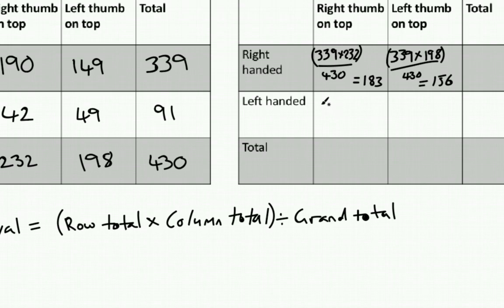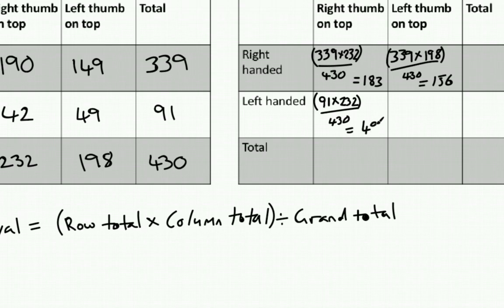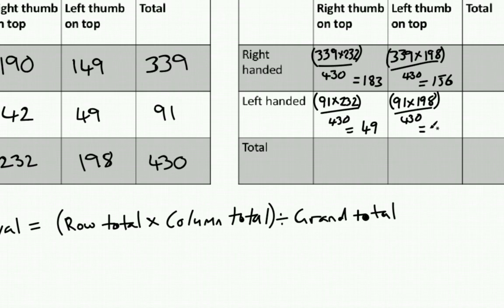For our left-handed categories: row total of 91 multiplied by column total of 232, divided by 430, gives an expected value of 49. And for left thumb and left-handed: 91 multiplied by column total of 198, divided by grand total of 430, gives a value of 42. Run those through a calculator to verify. Our expected values are therefore 183, 156, 49, and 42, and our totals are 430, 232, and 198.